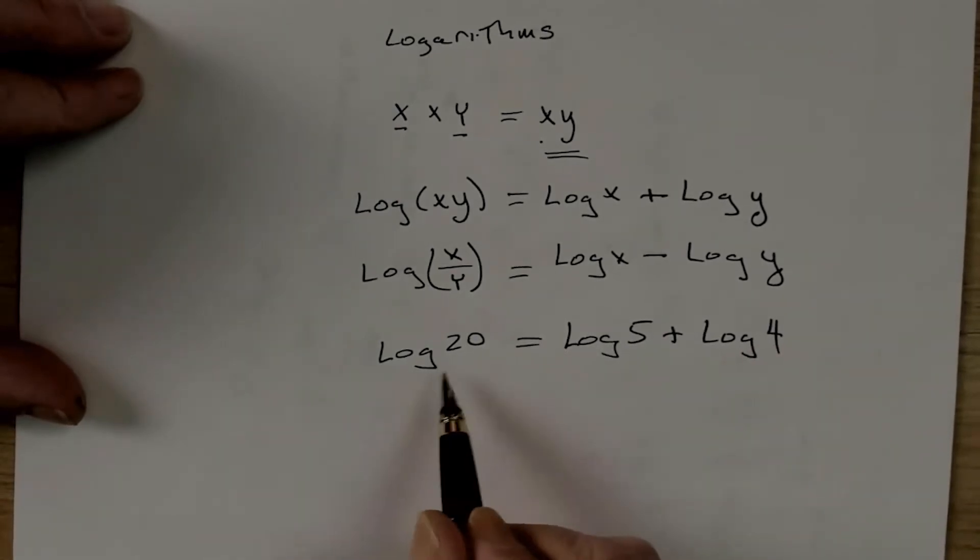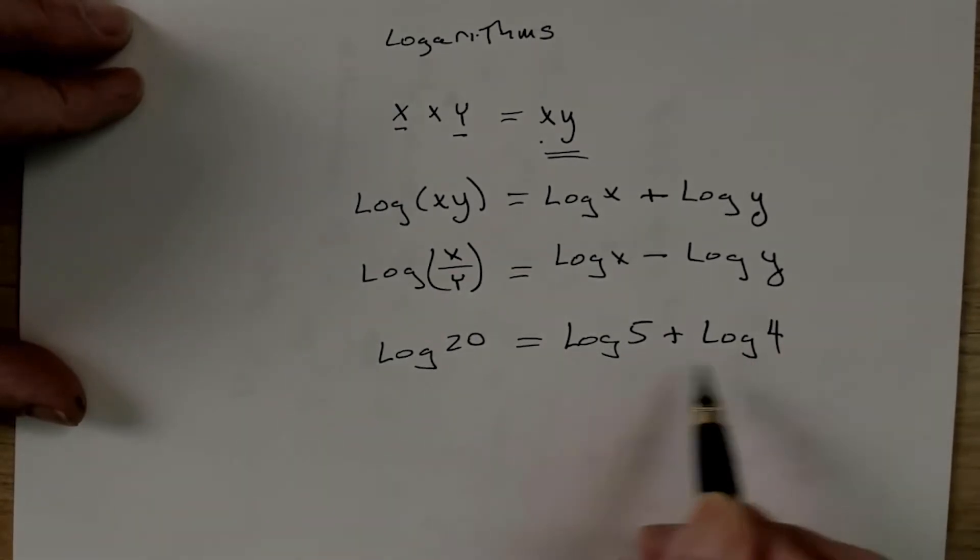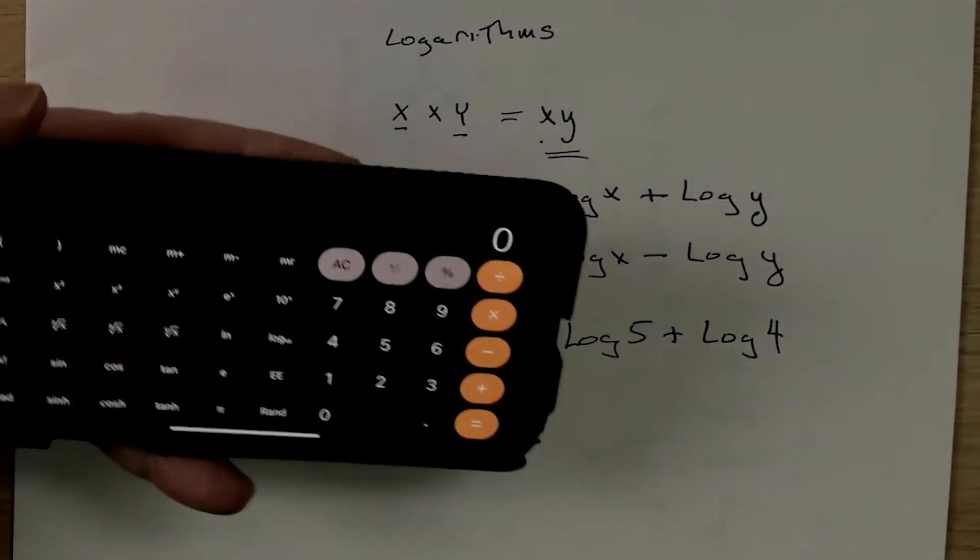Now, when we just say log, we're implying that this is base 10. So let's go ahead and check that real quick. So, 20 log is 1.3.